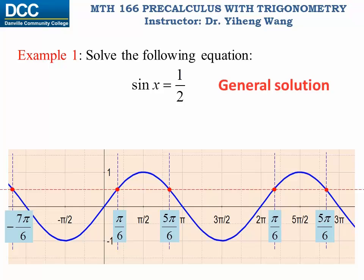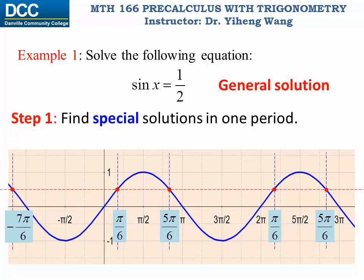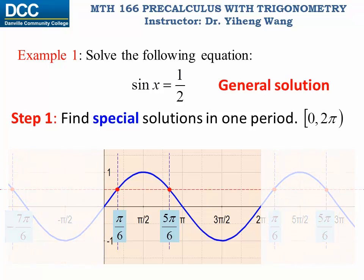What we're looking for is the general solution to this equation, and we're going to achieve that by following a simple two-step strategy. The first step is to find all the special solutions in only one period. Since the sine function has a period of two pi, we can look for special solutions in any period of two pi. For convenience, let's work on the period from zero, including zero, to two pi, not including two pi.